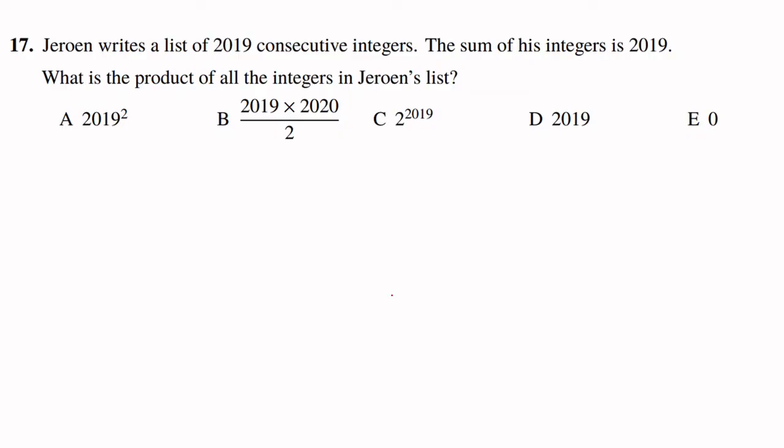The question states: Gerian writes a list of 2019 consecutive integers. The sum of his integers is 2019. What is the product of all of these integers in the list? So remember, it's the product.